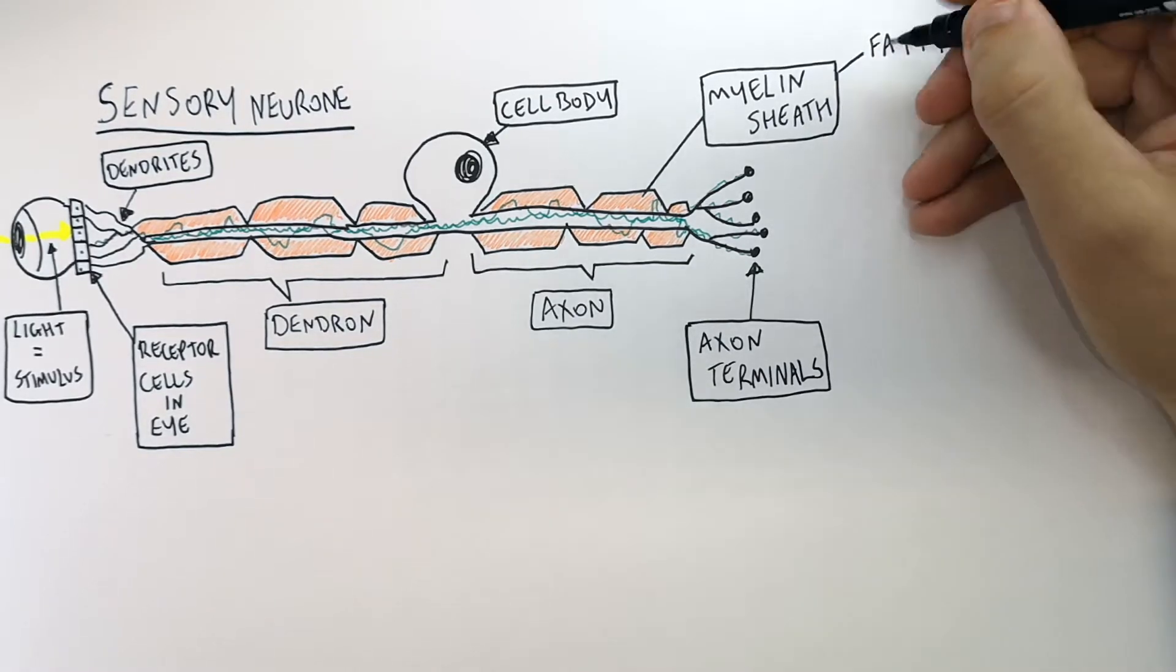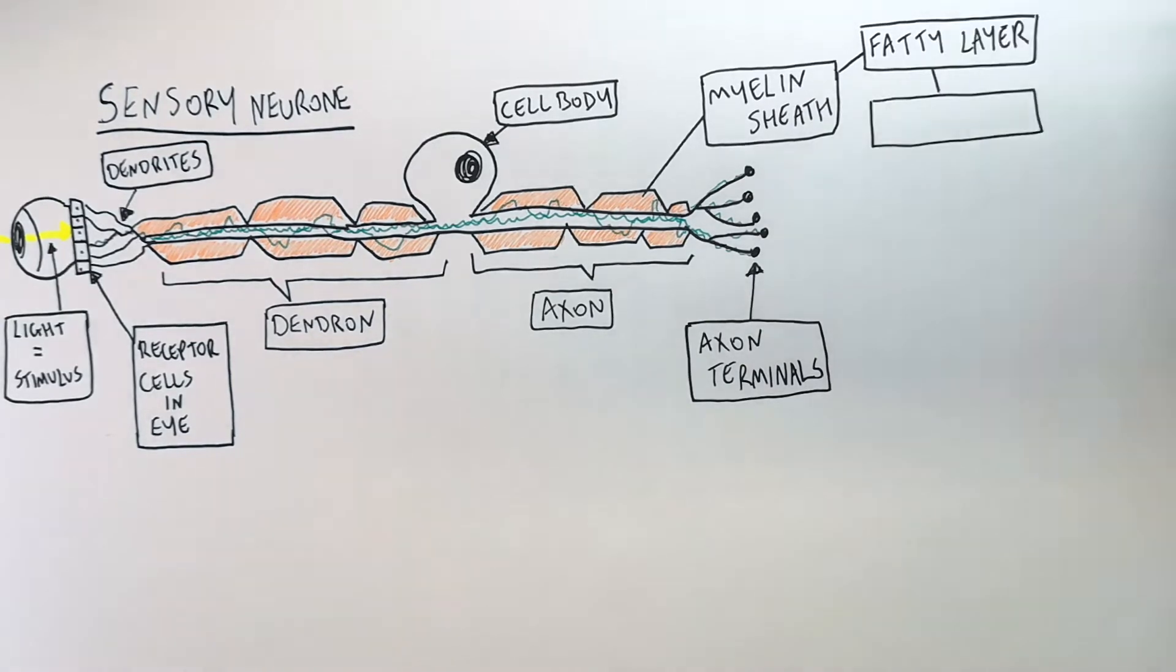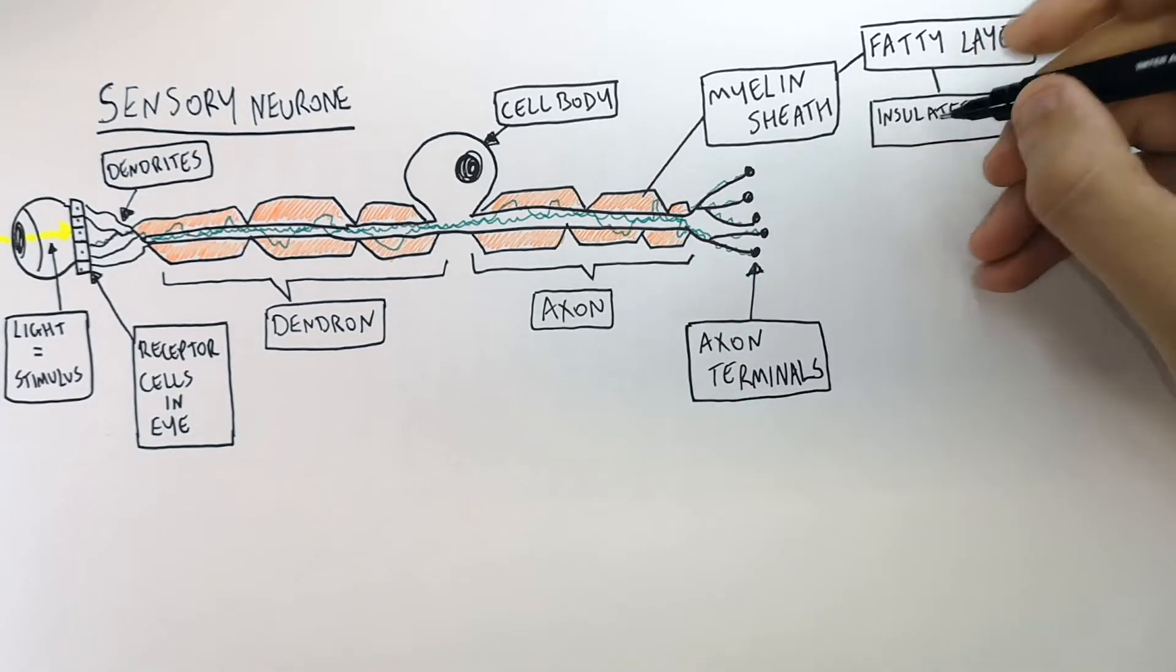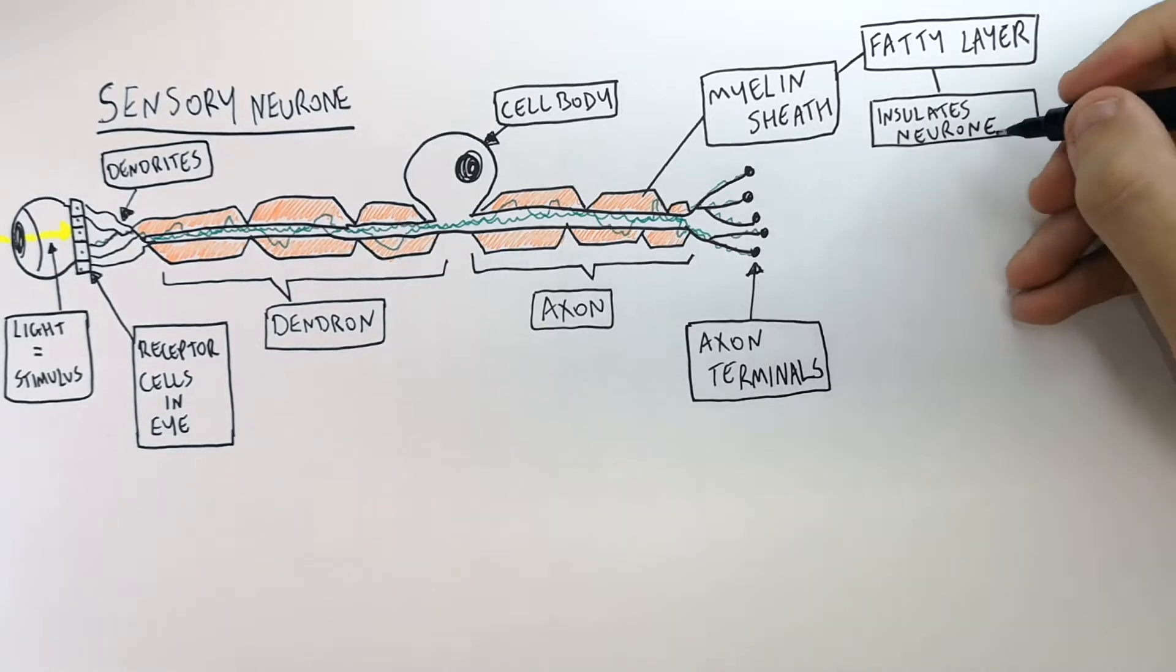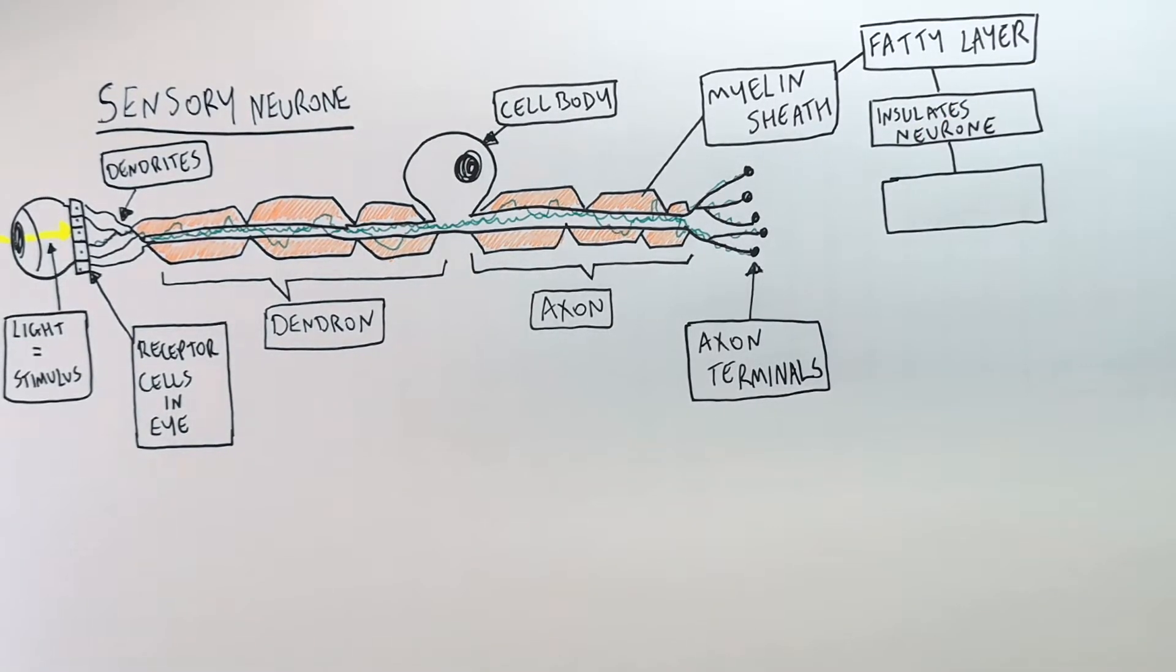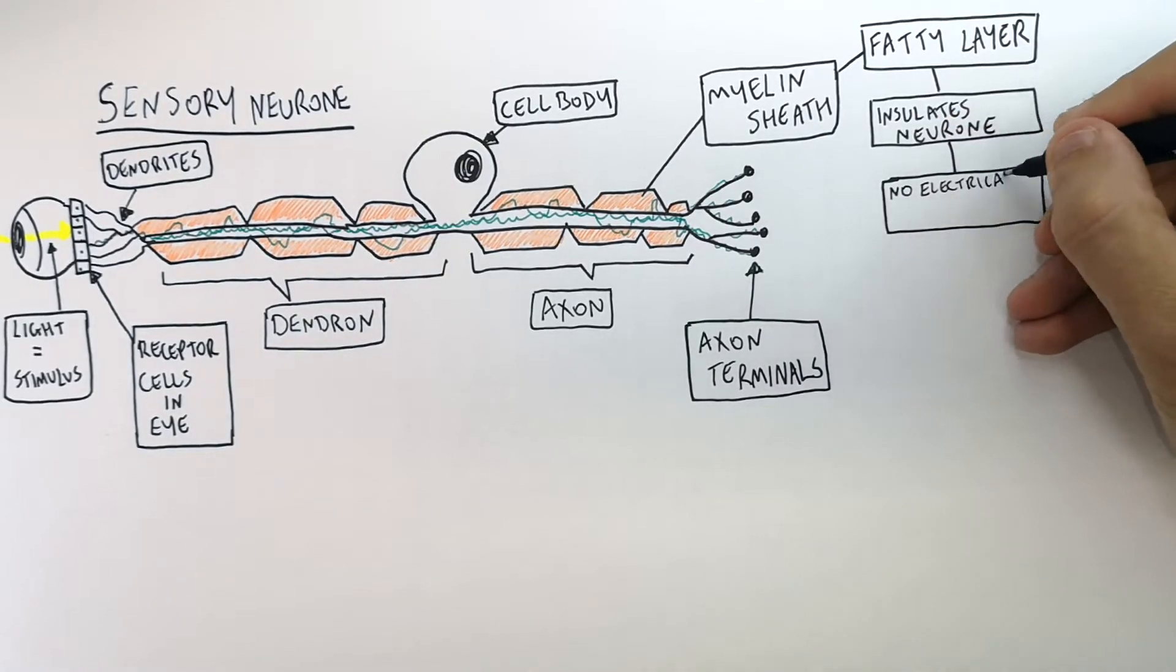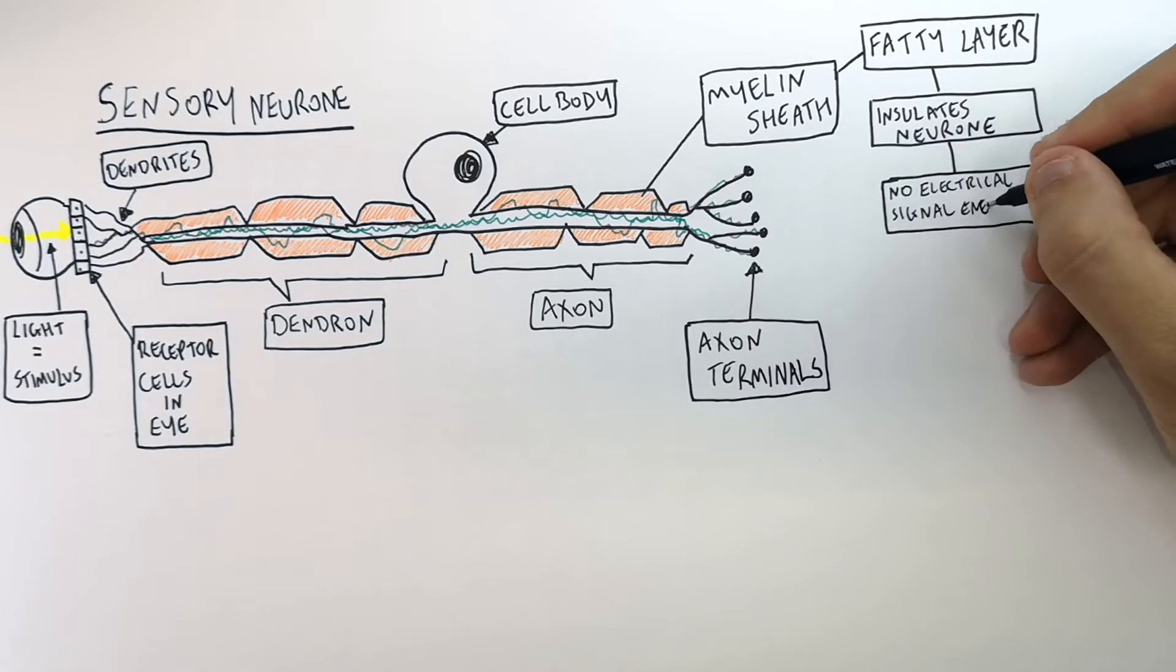So it's a fatty layer. The myelin sheath is a fatty layer that insulates the neuron so that no electrical energy is lost. So therefore no electrical energy in the impulses is lost.